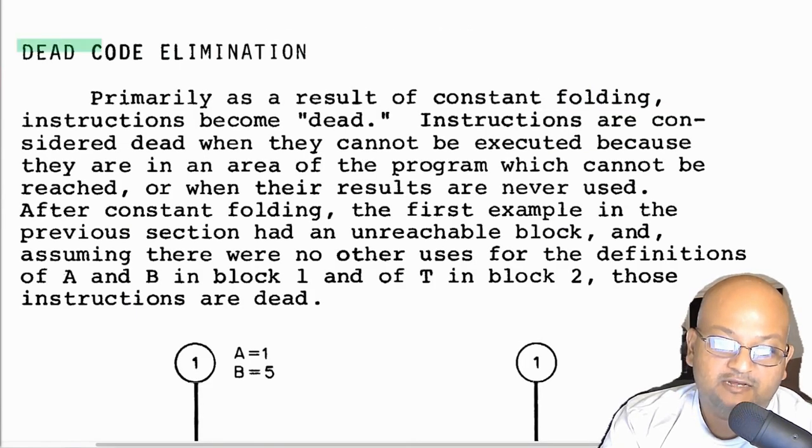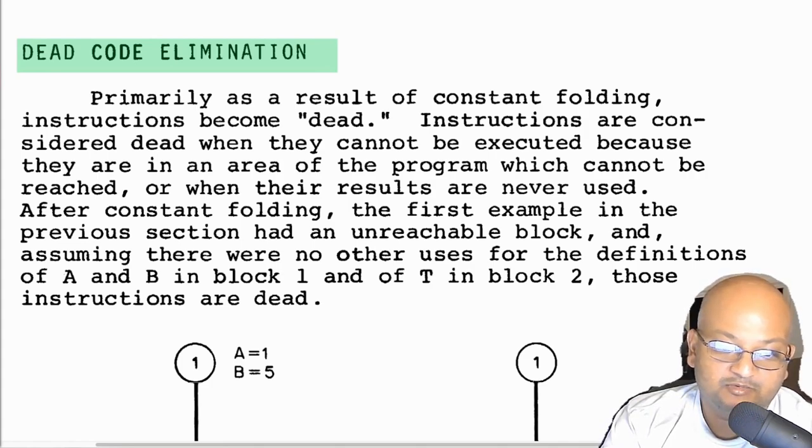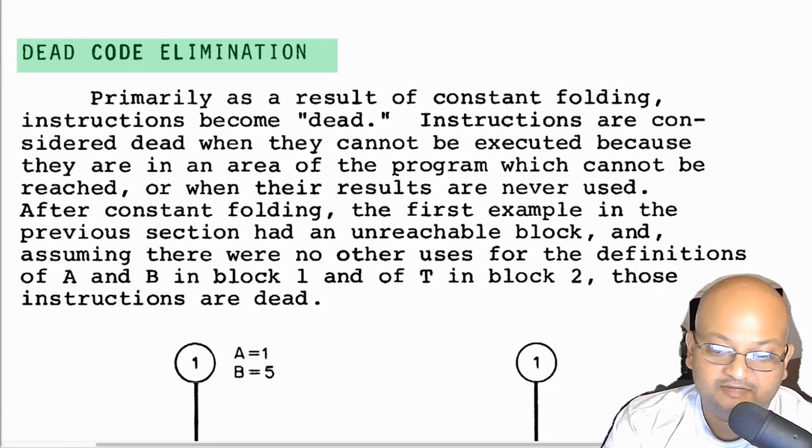And that brings us to dead code elimination. Often when you repeatedly apply a bunch of optimizations, you'll end up with code that is never used. You'll find values that are computed that are never used, for example, or like we just saw, you can find control statements like if statements where the condition is known at compile time. So you can just eliminate one of the branches of that if statement.